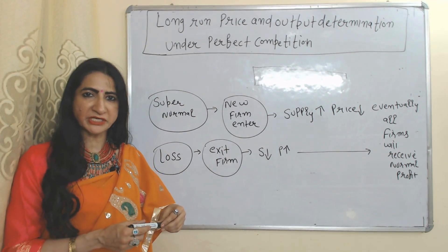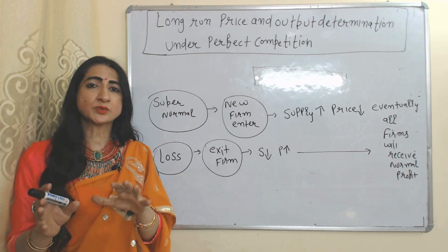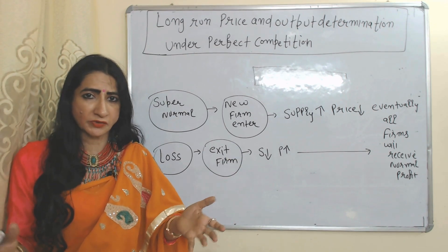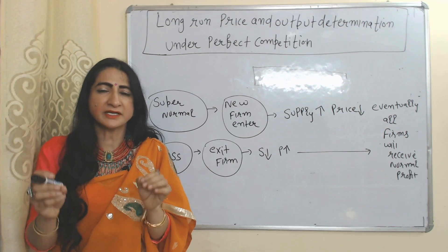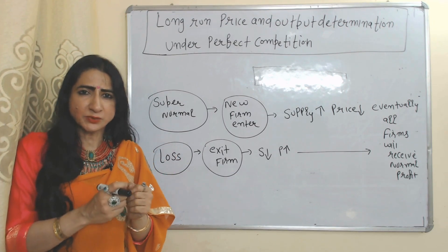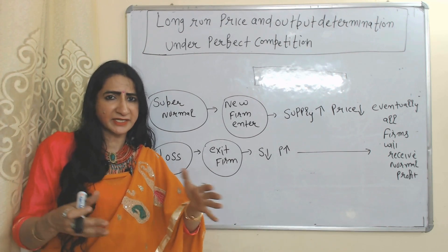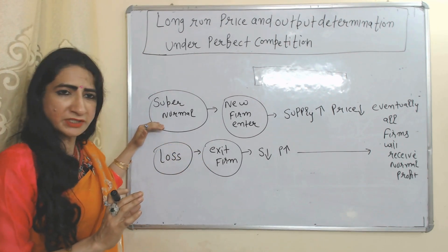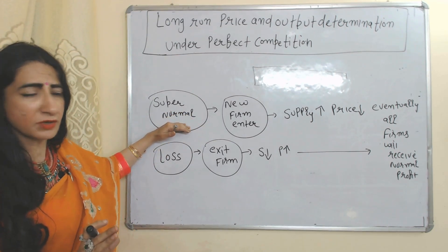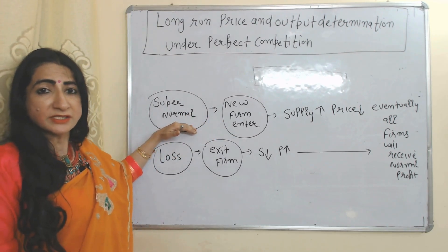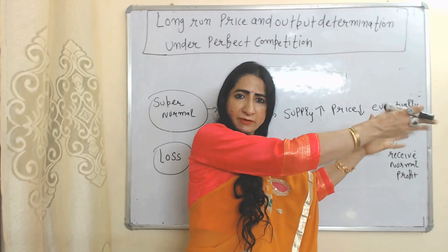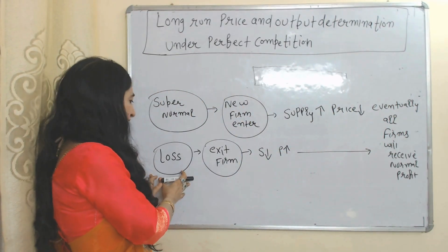Now we will see long-run price and output determination under perfect competition. As we know, during the short time period a firm can receive super normal profit, normal profit, and loss. But during the long time period under perfect competition, a firm will always receive normal profit. Why? Because under perfect competition there is free entry and exit of firms. Suppose during the short time period all firms are receiving super normal profit — to gain that super normal profit, during the long time period more firms will enter the market. As more firms enter, supply increases and the price falls, eventually bringing all firms to normal profit.